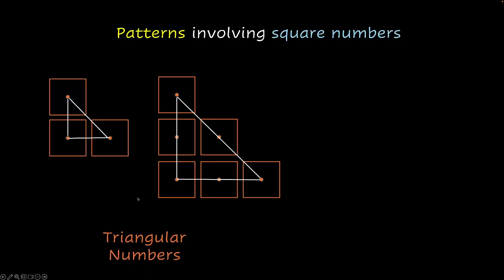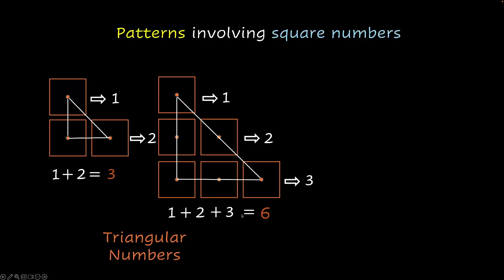These are triangular numbers. But what are these numbers? We have one block over here and we have two blocks here. So combined, 1 plus 2 is a total of 3 blocks. 3 is a triangular number. And what's this one? This is 1 block, 2 blocks, and 3 blocks. So this is going to be 1 plus 2 plus 3, which is 6. 6 is a triangular number.